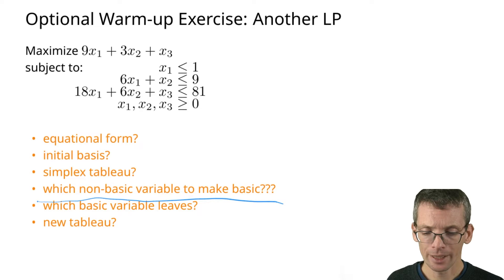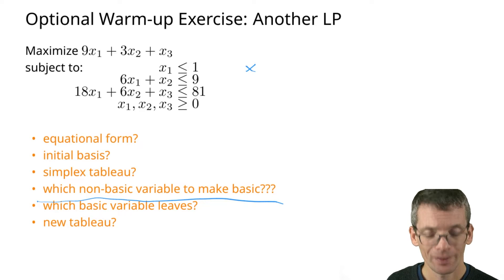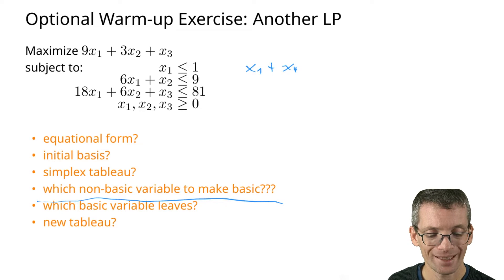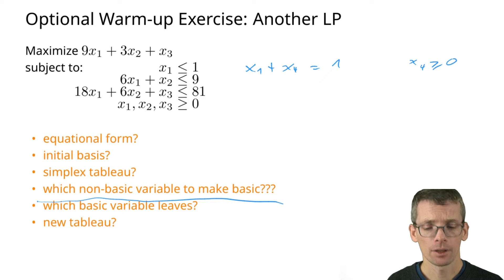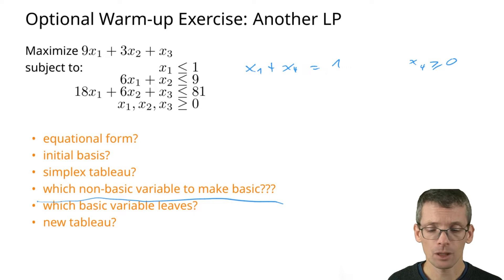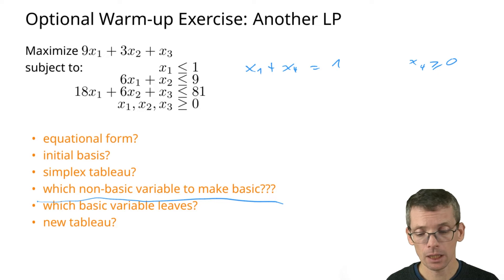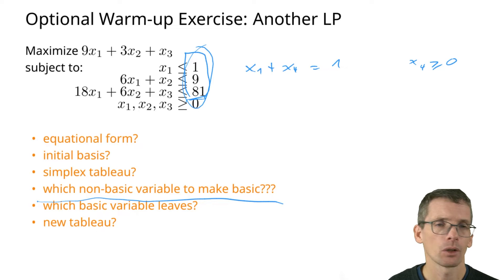First of all, we bring the LP into equational form, which means we add slack variables. For instance, the first inequality would then be an equality by adding x4 as the slack variable here. We also require that x4 is at least zero, and we will do that for all of the constraints with x5 and x6. Then our initial basis — we can take the slack variables x4, x5, x6 as our initial basis, because b is non-negative.